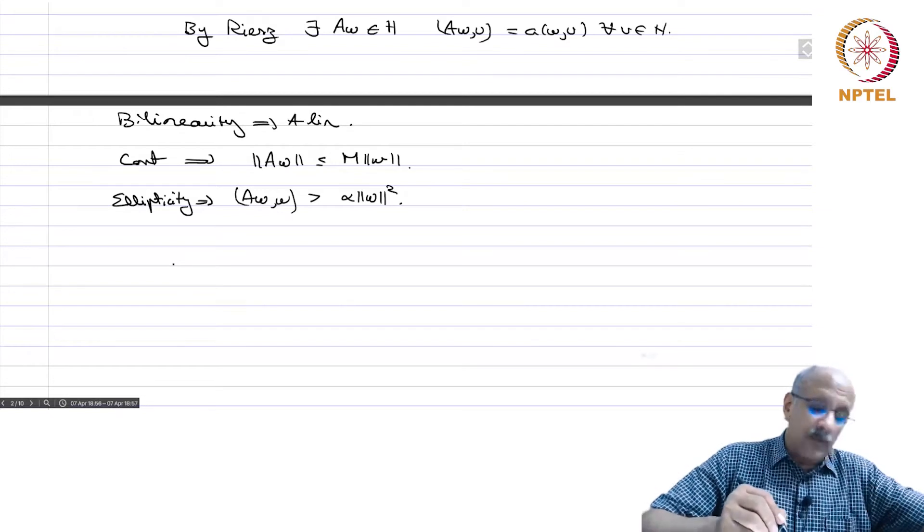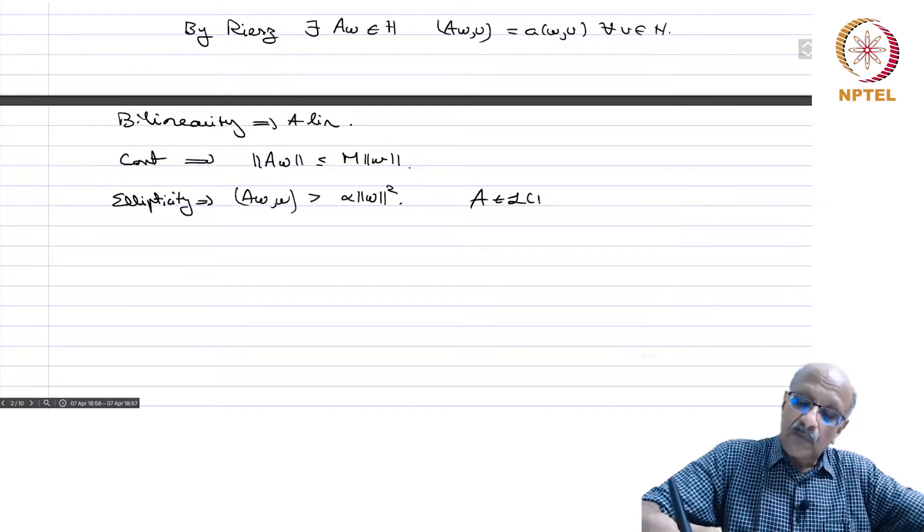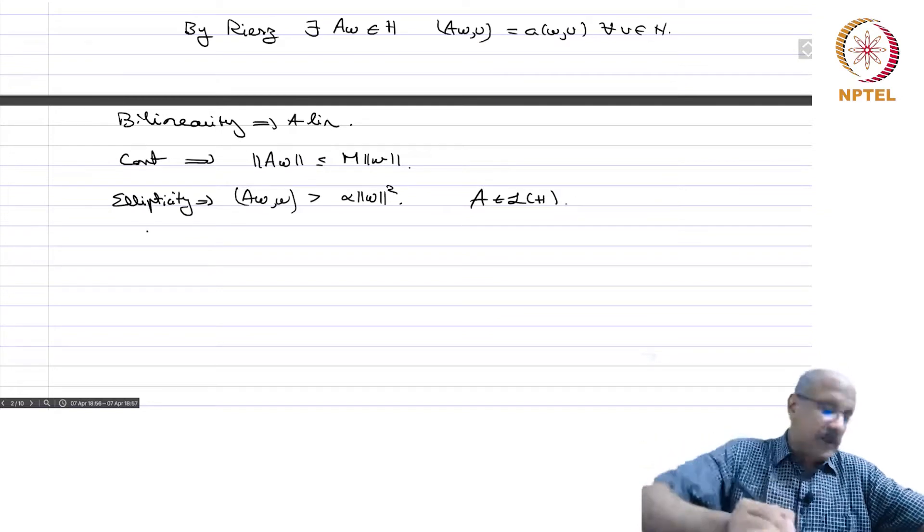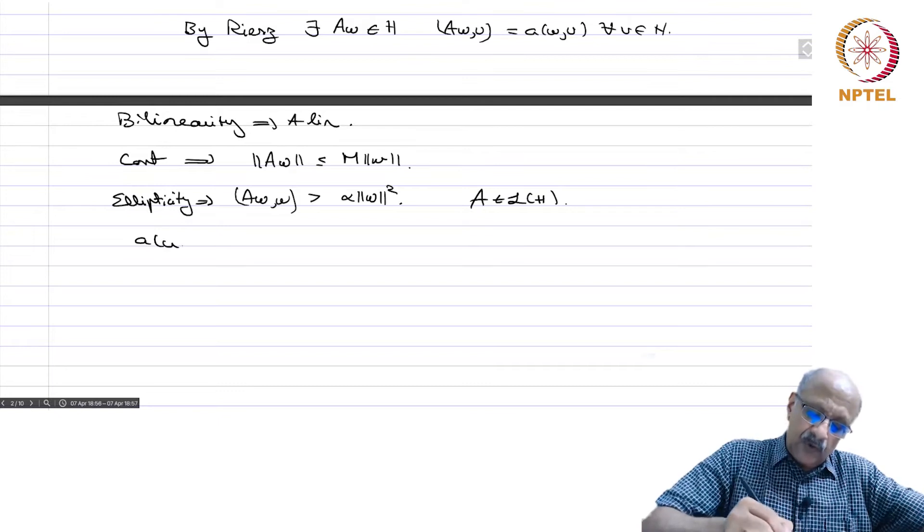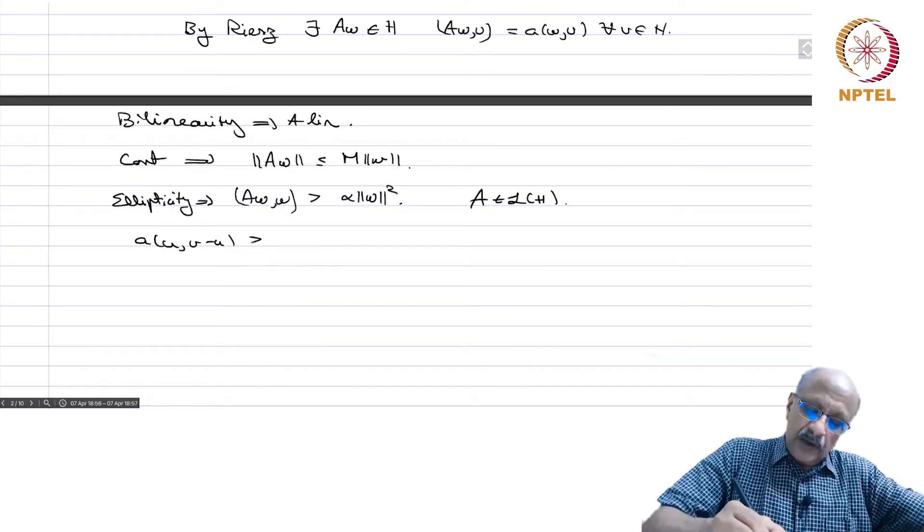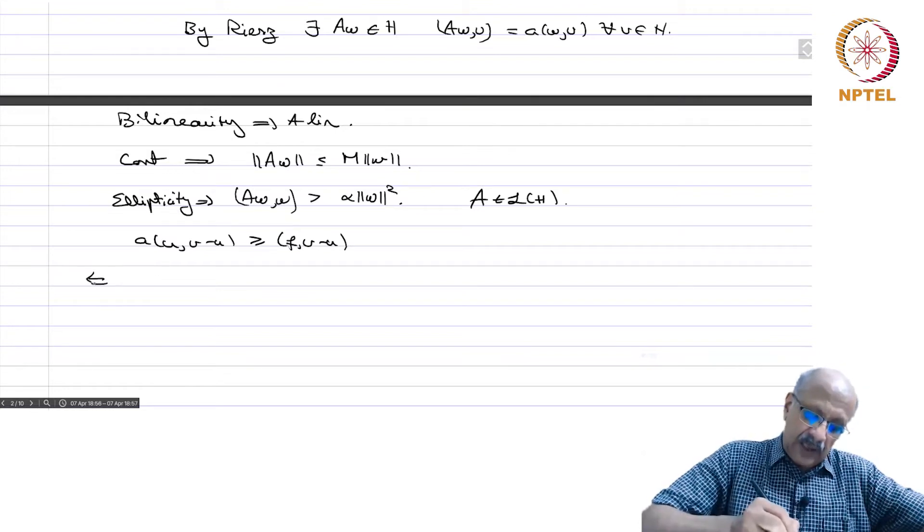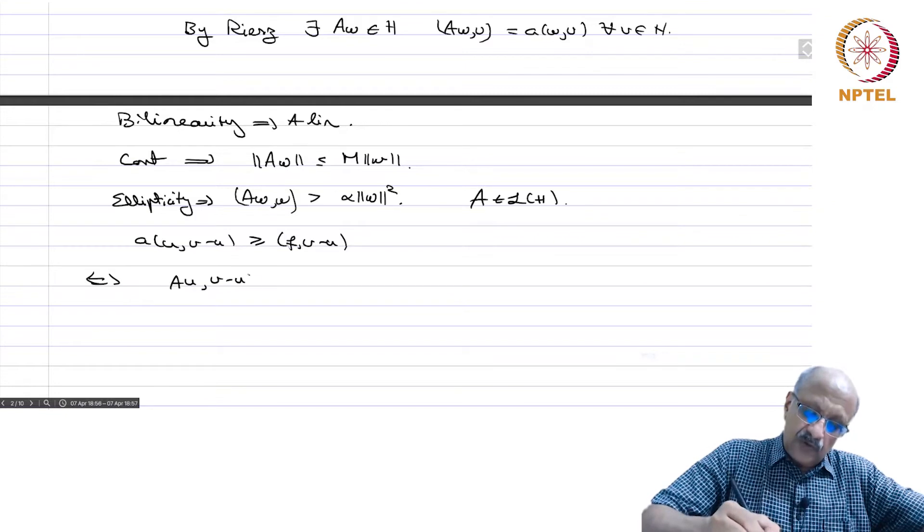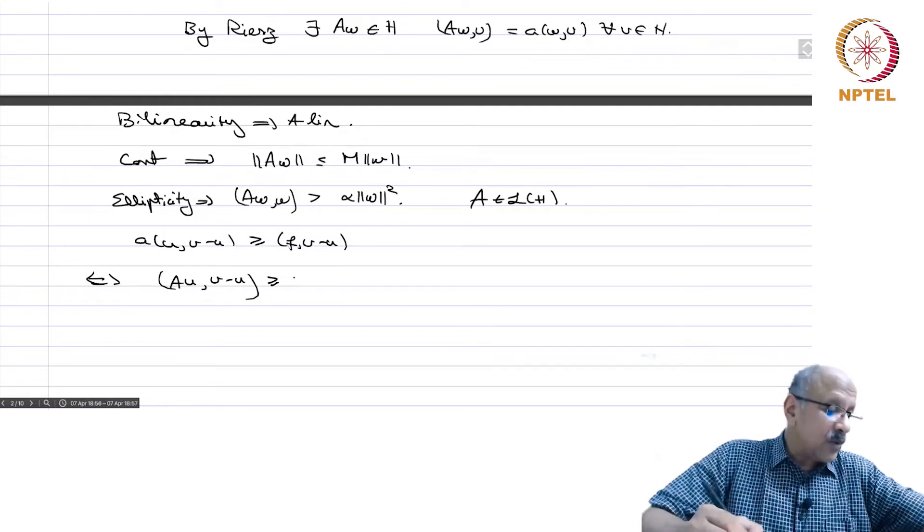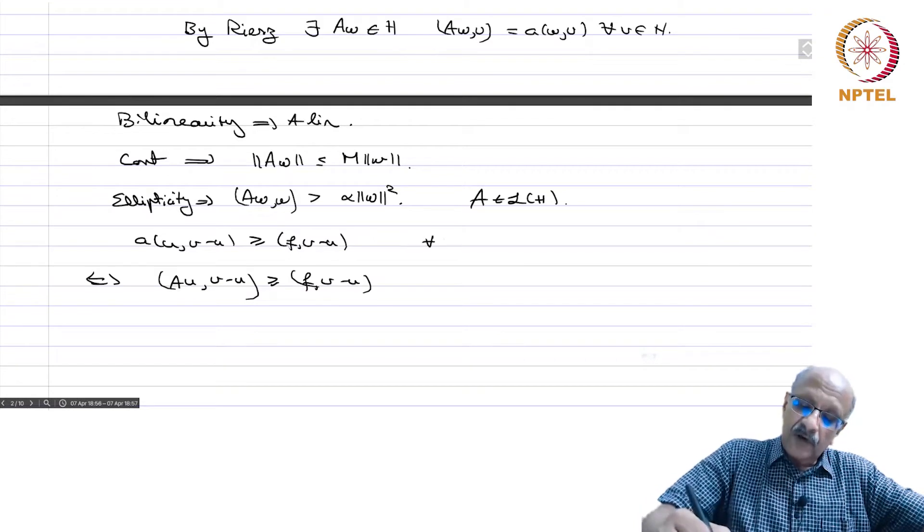A is a bounded linear operator. A belongs to L(H), so now we can write A(U, v-U) ≥ F(v-U) is the same as saying Au·(v-U) ≥ F·(v-U) for every v in K.